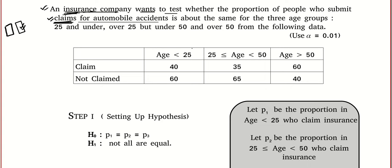According to this question, when they checked people of age less than 25, they found that 40 out of 100 people claim. For age between 25 and 50, 35 out of 100 claim. And you can see this amazing part: 60 people claim out of 100 once they have age beyond 50.